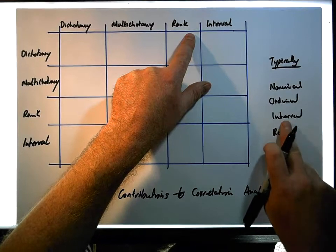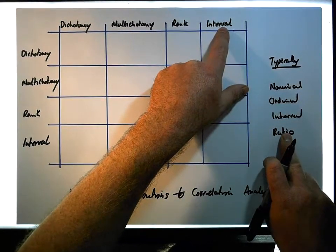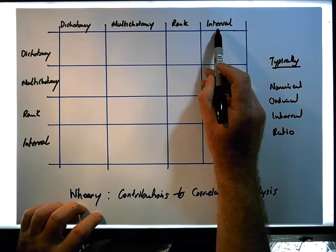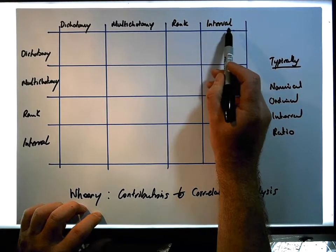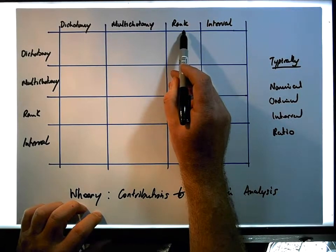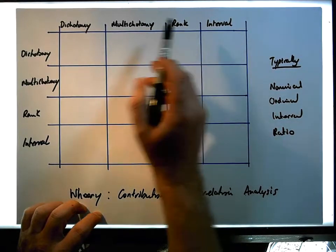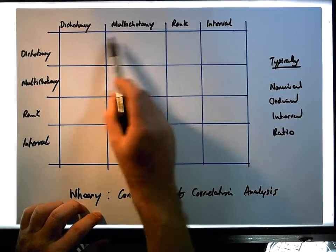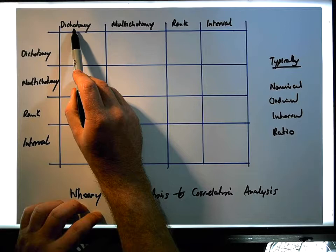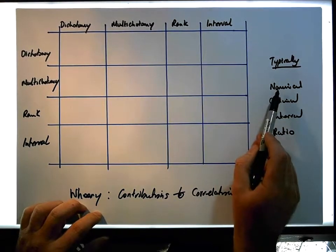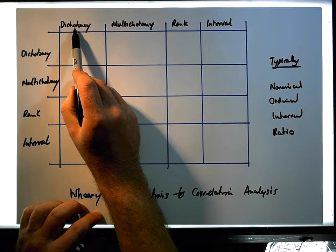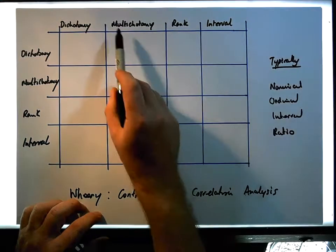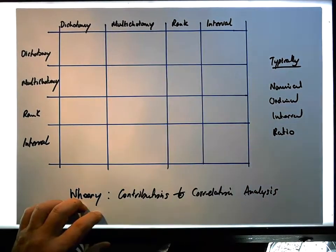The interval and ratio variables are classified together simply as interval variables. So for our purposes, interval represents interval/ratio scaled variables. Rank represents variables measured on an ordinal scale. Dichotomy and multichotomy together capture all variables measured on a nominal scale — dichotomy meaning just two levels of measurement (binary/dichotomous), and multichotomy meaning more than two levels of measurement.